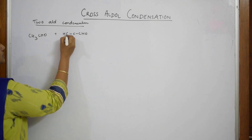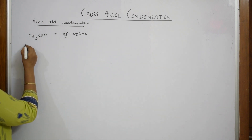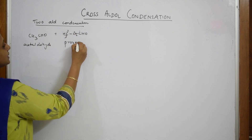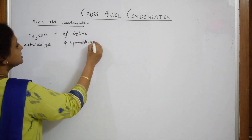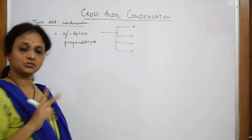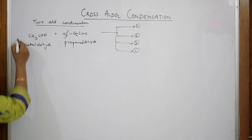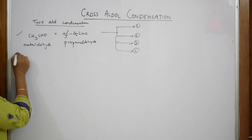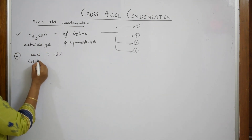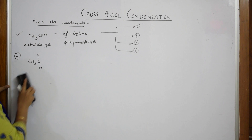When you mix acetaldehyde (CH₃CHO) and propanaldehyde (CH₃CH₂CHO), you get four different products because it's a cross combination. The first combination is aldehyde plus aldehyde — specifically acetaldehyde with acetaldehyde. Write it as CH₃CHO combined with another CH₃CHO.